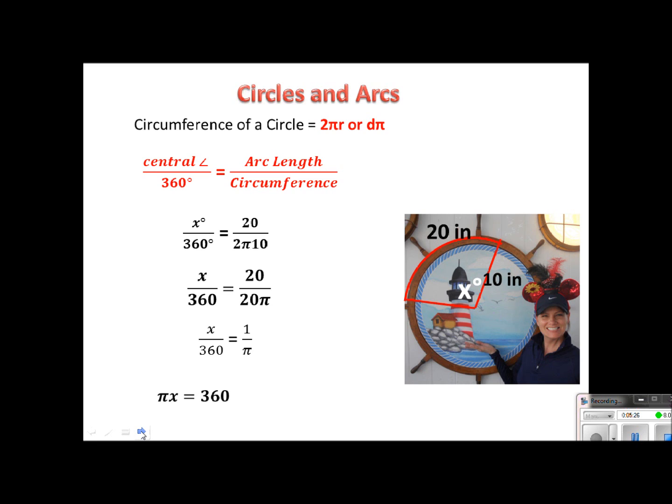It would be 360 equals πx, and then if I divide by π, I would end up with approximately 114.59 degrees.